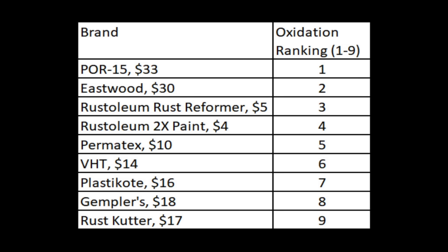Trying to figure out which products did the best at blocking rust is fairly subjective, but the POR-15 definitely seems to have done the best. Eastwood seems to have finished in second, Rust-Oleum Rust Reformer third, Rust-Oleum 2X fourth, and Permatex finished fifth.